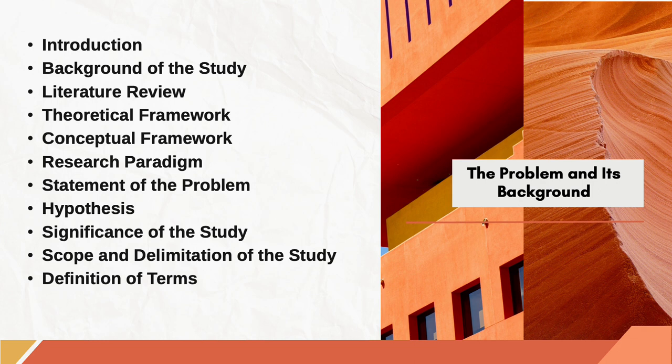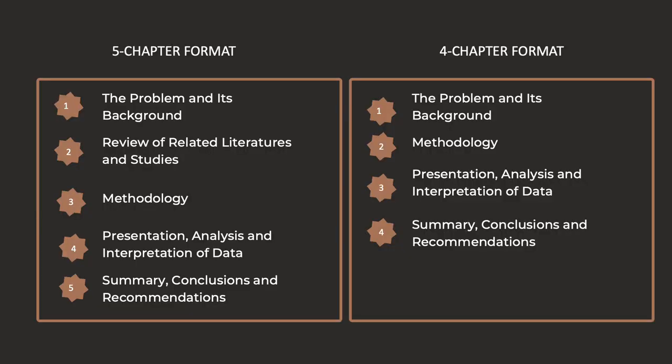Next, the Literature Review, also known as the Review of Related Literatures and Studies. It was mentioned in the discussion about the Conventional Parts of Thesis and Dissertation that a five-chapter format or a four-chapter format is commonly used by colleges and universities. Chapter 2, or the Review of Related Literatures and Studies of the five-chapter format, is included in the four-chapter format in Chapter 1 as a sub-part.